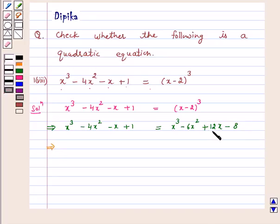Shift the terms from the right hand side to the left hand side. We get x cubed minus x cubed minus 4x squared plus 6x squared minus x minus 12x plus 1 plus 8 equals 0.